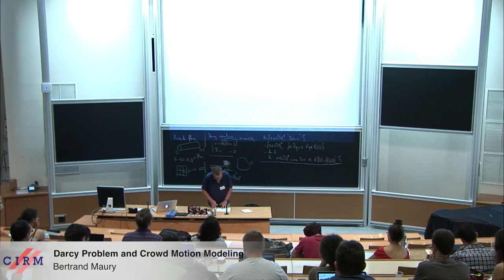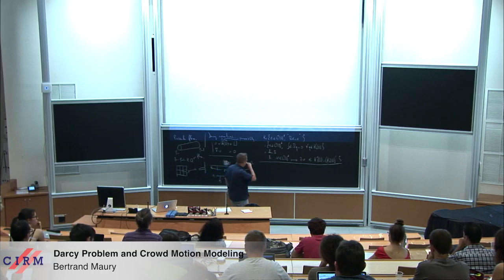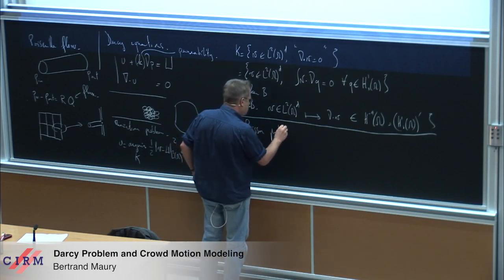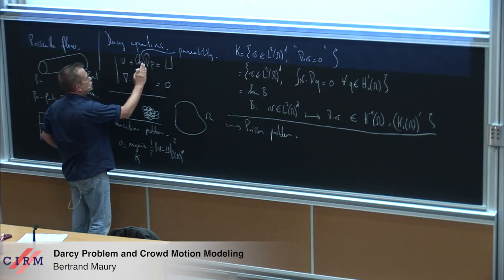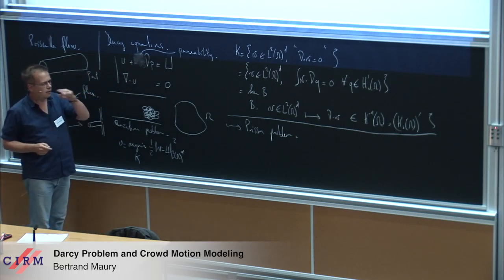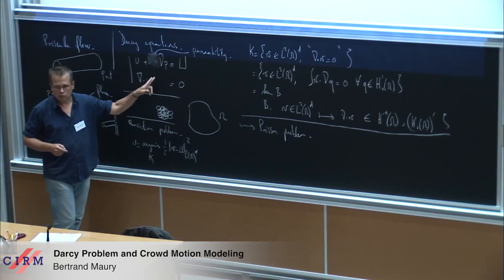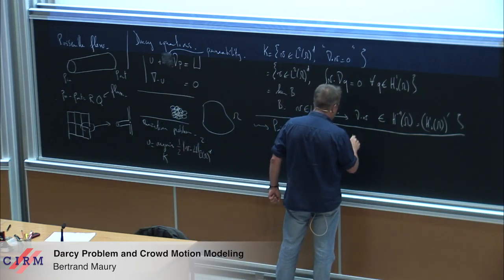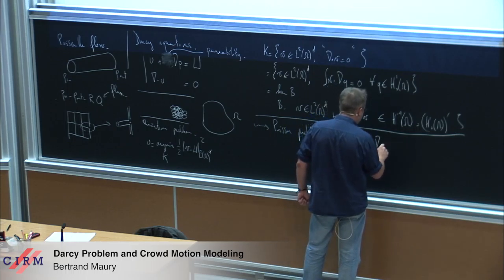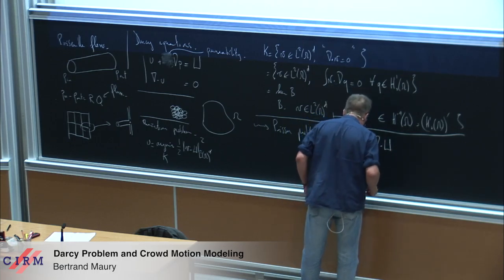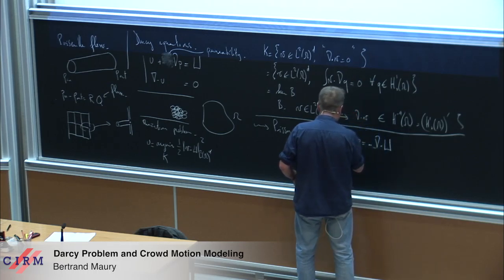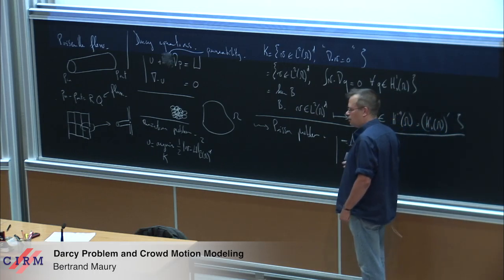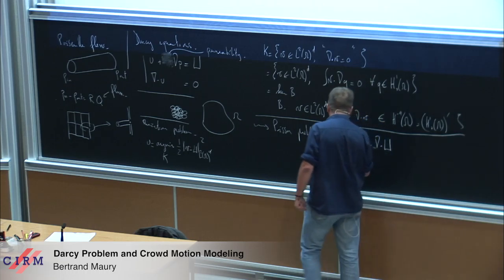Let me finish with the link to the Poisson problem. If you have this equation with K equals one, you can eliminate the velocity to obtain an equation on the sole pressure P by writing U equals capital U minus gradient P, and you end up with the Poisson problem: minus the divergence of gradient P equals minus the divergence of capital U.